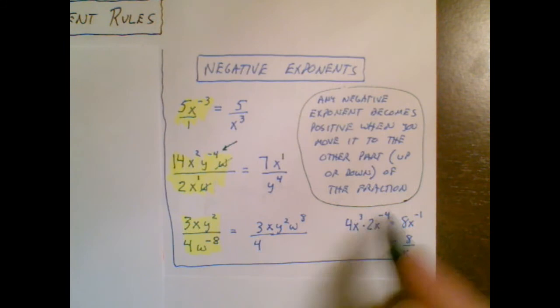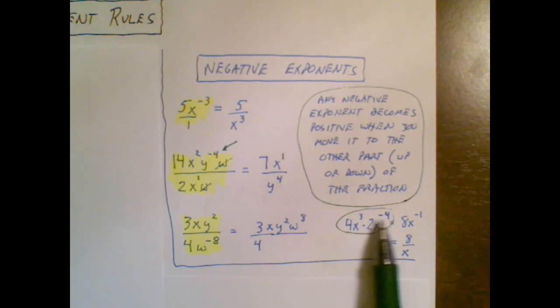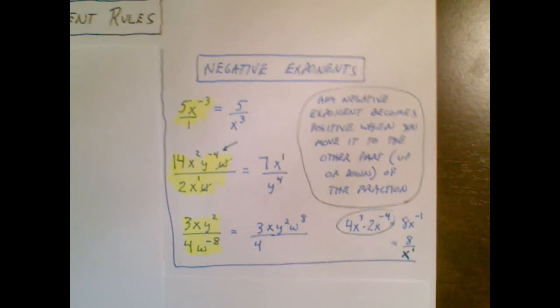One last example I forgot to highlight this one but take a look at this. To revisit some old rules 4 times 2 is 8. When I'm multiplying I add exponents so 3 plus negative 4 is negative 1. 8x to the negative 1 I can now say hey I have a negative exponent. I can move that to the denominator and make it a positive exponent and you don't usually bother writing the exponent of 1.